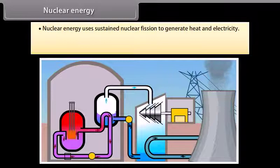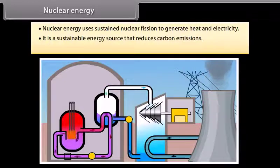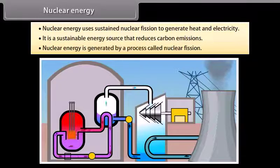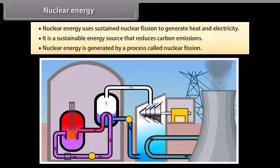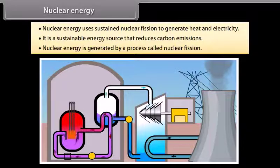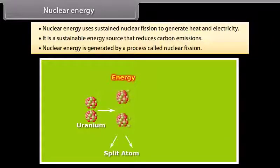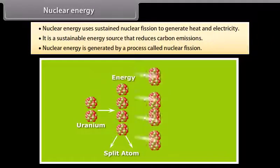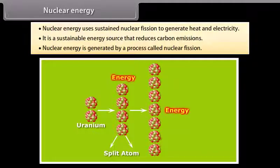Nuclear energy. Nuclear energy uses sustained nuclear fission to generate heat and electricity. It is a sustainable energy source that reduces carbon emissions. Nuclear energy is generated by a process called nuclear fission. In this process, the nucleus of heavy uranium, plutonium, or thorium is bombarded with low energy neutrons. This atom is then split into lighter nuclei. A tremendous amount of energy is released. For example, the fission of an atom of uranium produces 10 million times the energy produced by the combustion of an atom of carbon from coal.